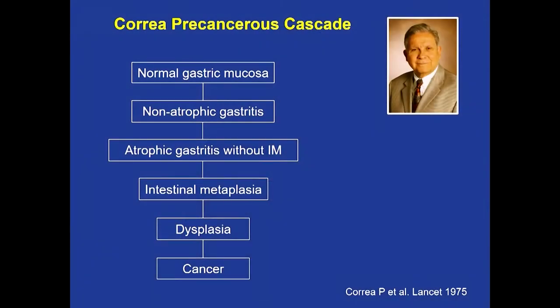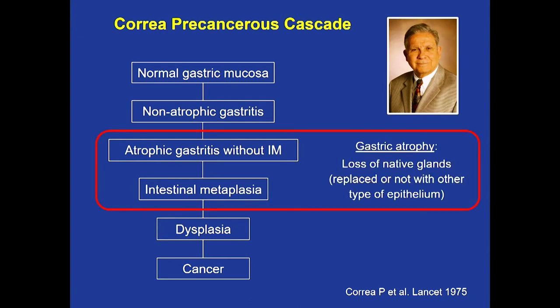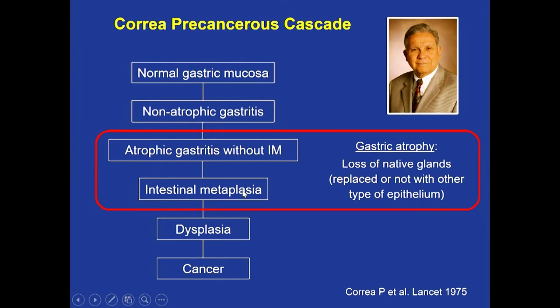This is my version of the Correa cascade. I'm going to bring your attention to these two stages, which are the ones where we try to follow patients to avoid advanced gastric cancers. Gastric atrophy is defined as the loss of native glands, whether replaced or not by other types of epithelium. With this definition, intestinal metaplasia is part of gastric atrophy. Once the atrophic process starts, it continues all the way. When we say intestinal metaplasia, it's obvious that the patient already has atrophy.